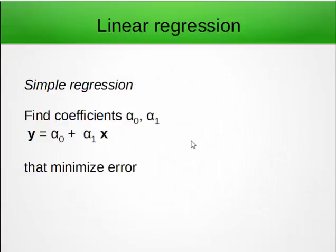So in the case of simple regression where we have just one independent variable x, we want to find coefficients alpha 0 and alpha 1 that make this function fit our data well. That means that minimize the error.